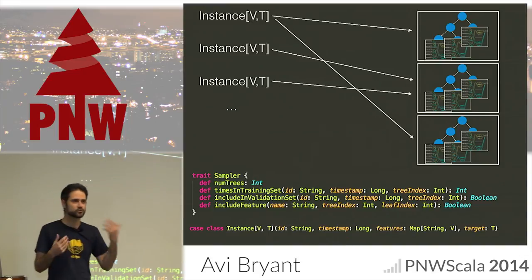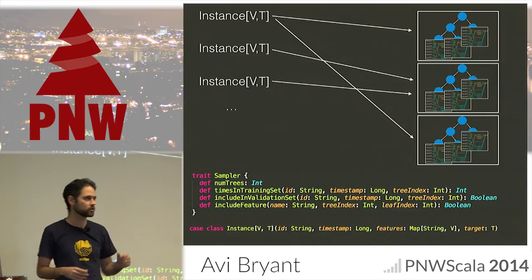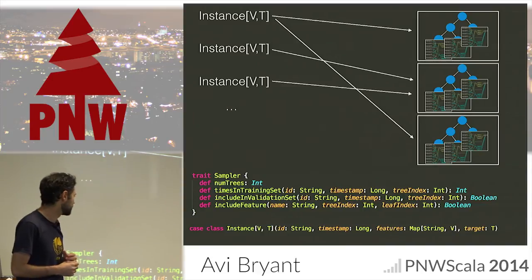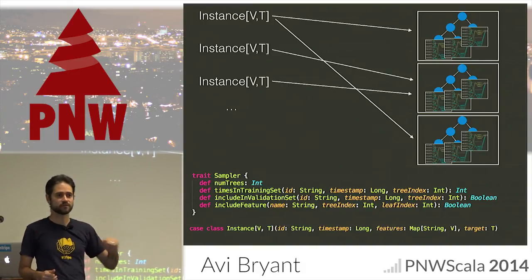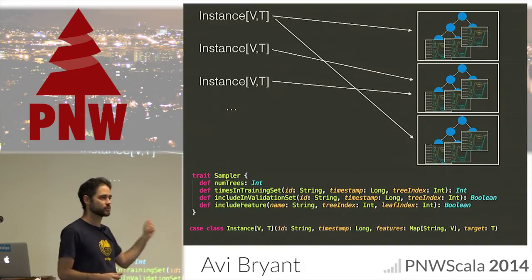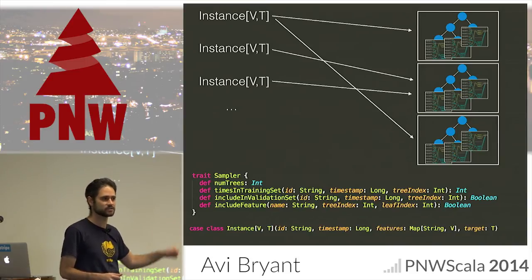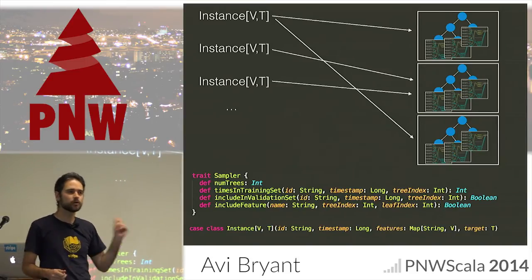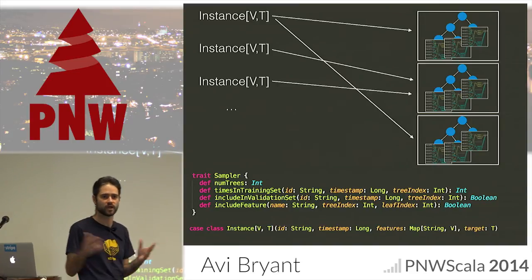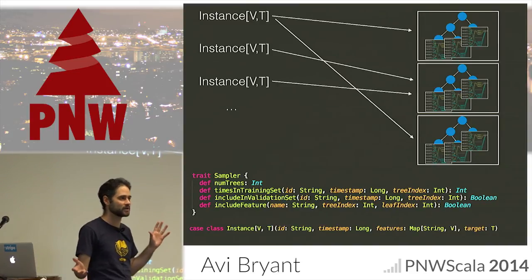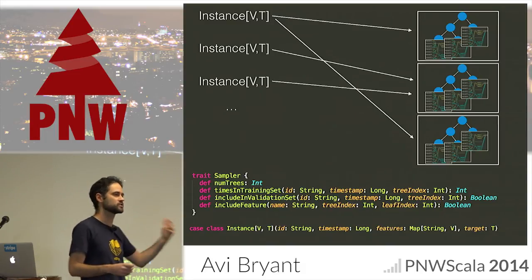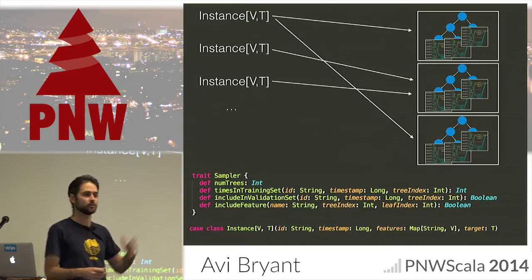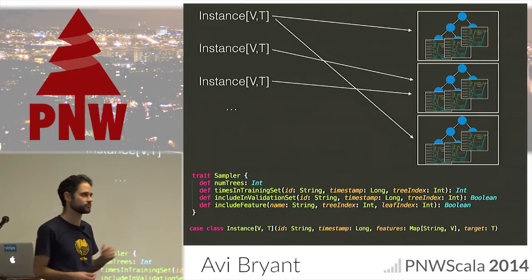Which tree something goes to is controlled by the sampler trait. The sampler trait says how many trees we want. It also says, for a given instance and a given tree, how many times we want to include that instance in the training for that tree. It's 'how many times' because for random forests you're doing bootstrap sampling — sampling with replacement — so it can actually include the same instance multiple times. It might be zero times, it might be three times in the same tree.